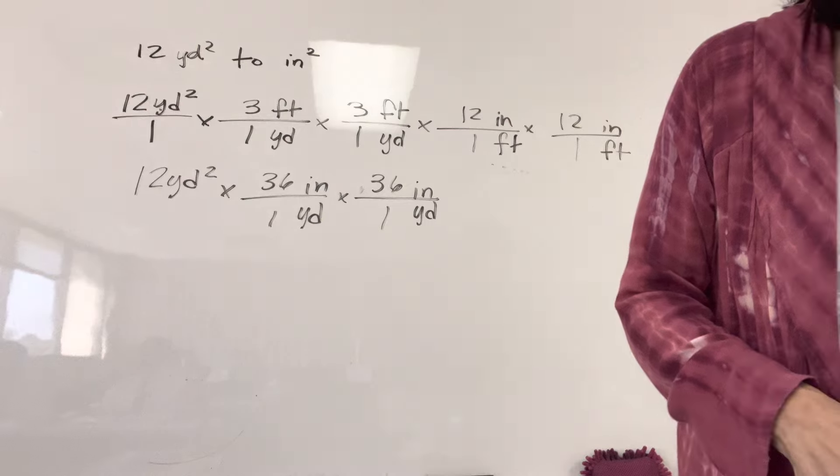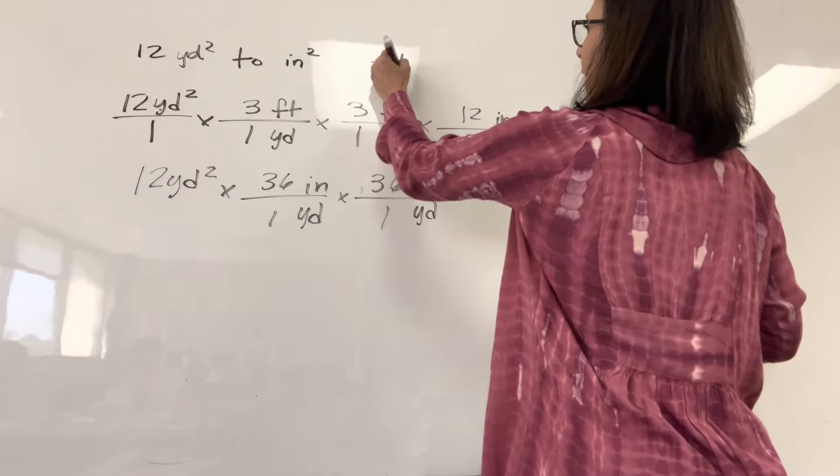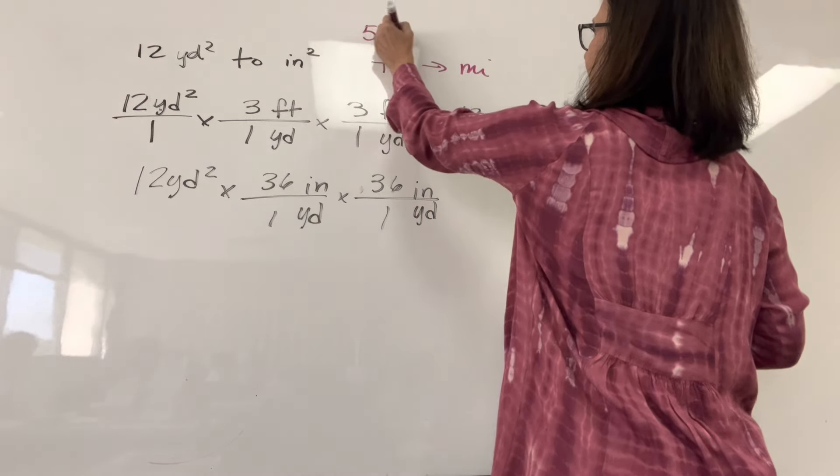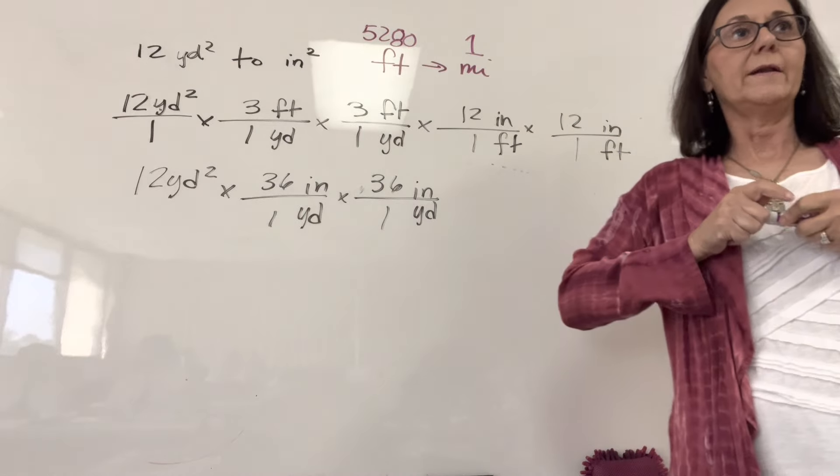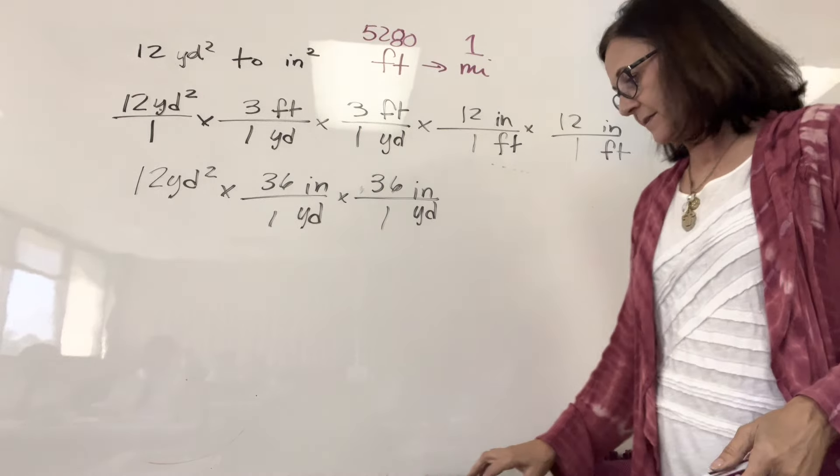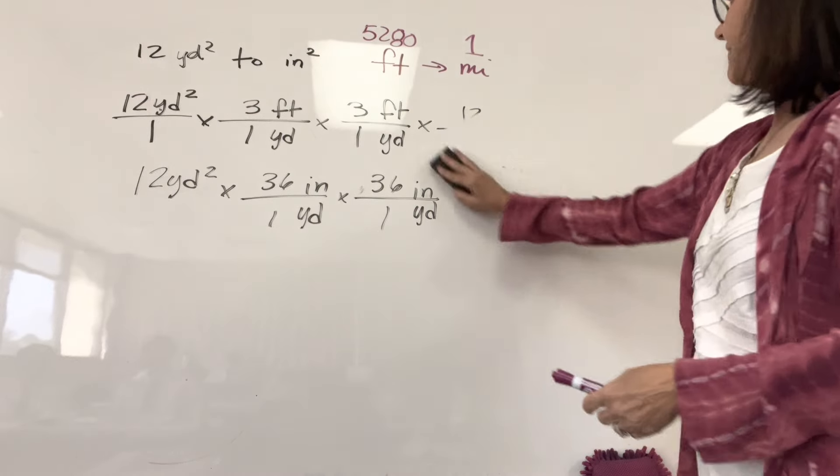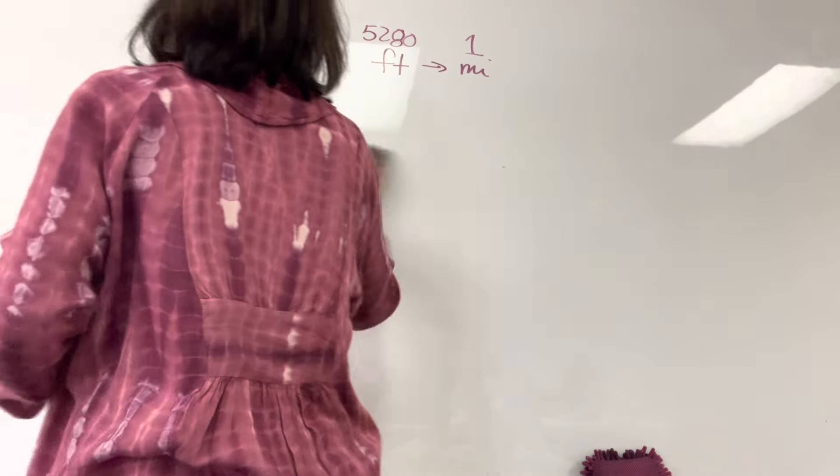All right. How do I get from feet to miles? Oh, there's 5,280 feet in one mile. You need to memorize that. Do you have that memorized? We clearly do.